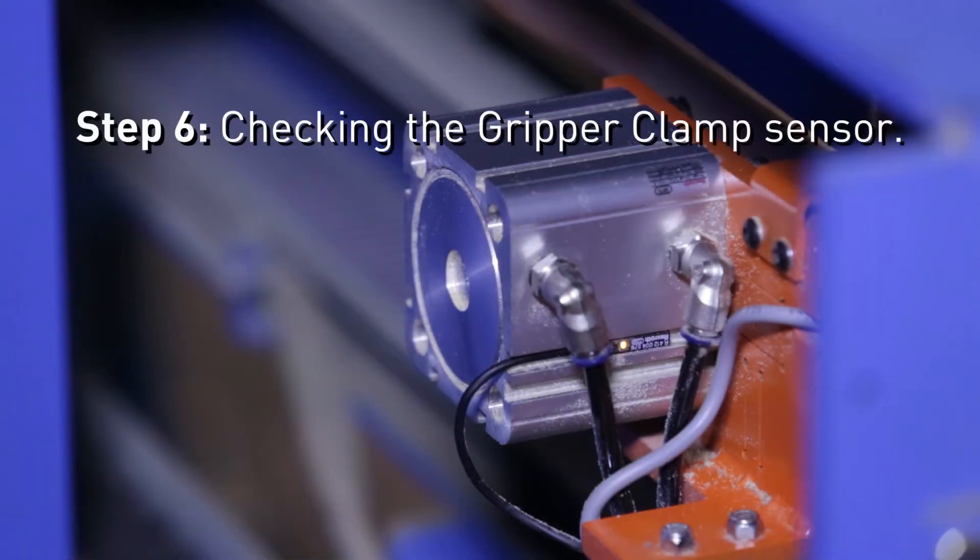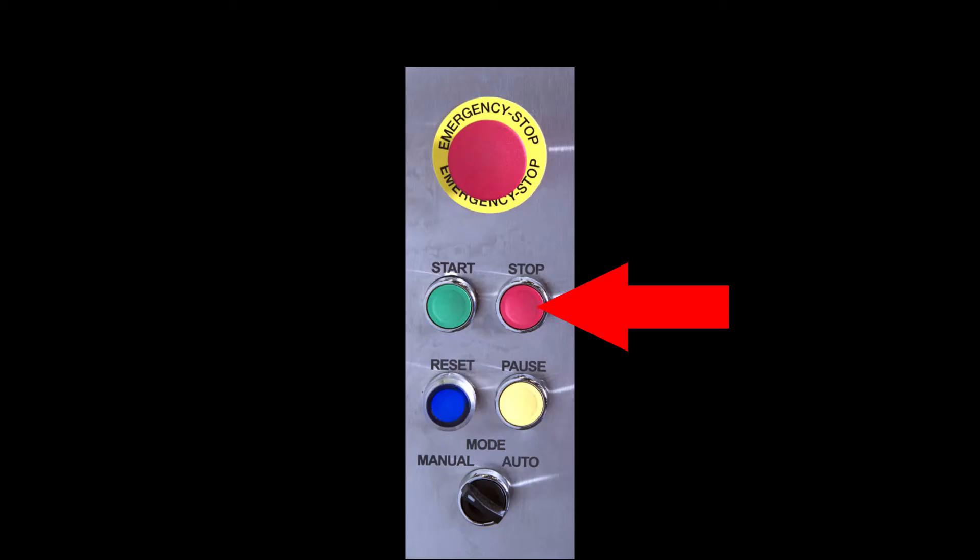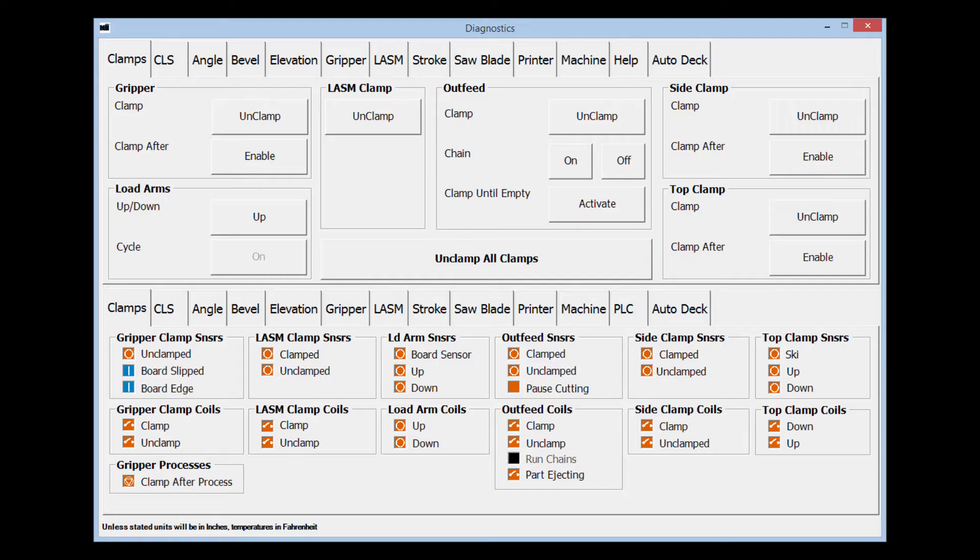The gripper clamp only has one clamp sensor, which indicates when the gripper is unclamped. To adjust it, make sure the saw blade motor is off. Open the detailed diagnostic screen on the HMI. The blue and orange squares on the clamp tab on the bottom half of the screen indicate what the gripper clamp sensor is reading.